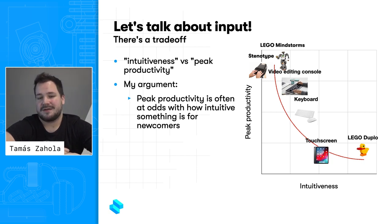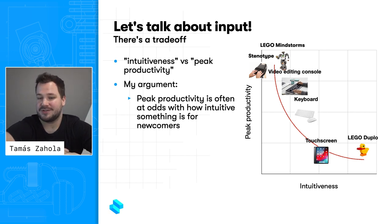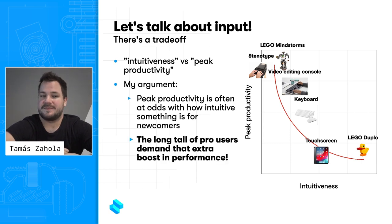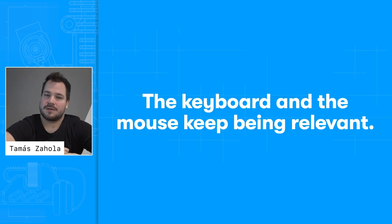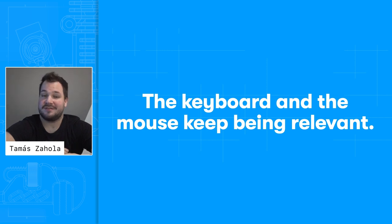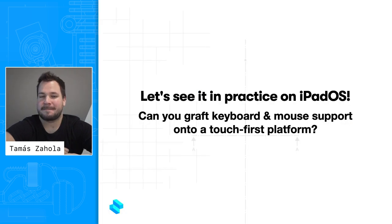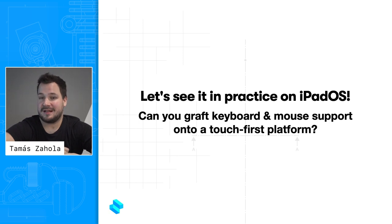So even though touchscreens are definitely more intuitive to use than traditional keyboards, pro users do have reason to stick with these physical peripherals because they want that boost in productivity. The tenet of this talk is that the keyboard and the mouse keep being relevant even in 2021. Now let's see how Apple managed to create support for these peripherals in their touch-first UIKit platform.